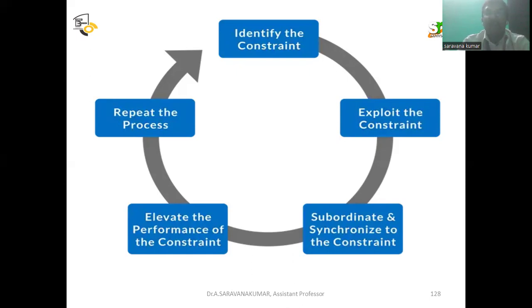The process of Theory of Constraints involves five steps: first, identify the constraint — where is the constraint happening; second, exploit the constraint; third, subordinate and synchronize to the constraint; fourth, elevate the performance of the constraint; and fifth, repeat the process.